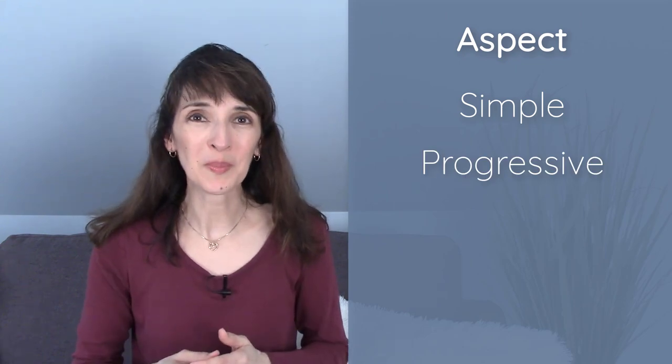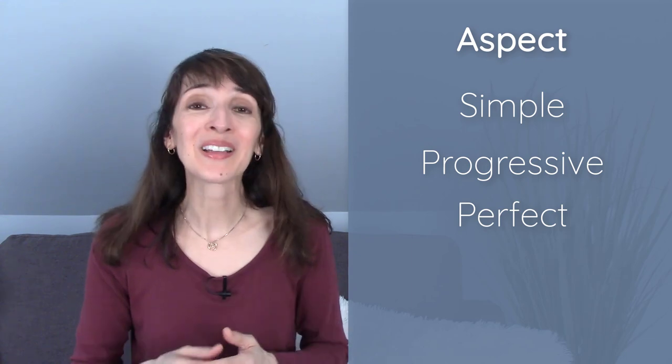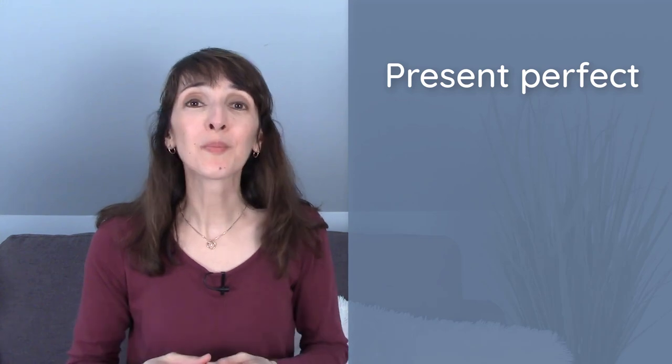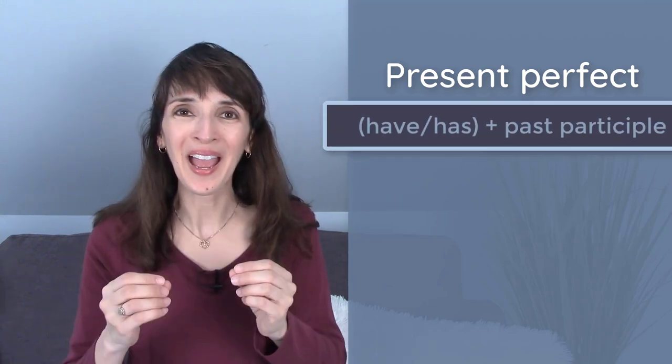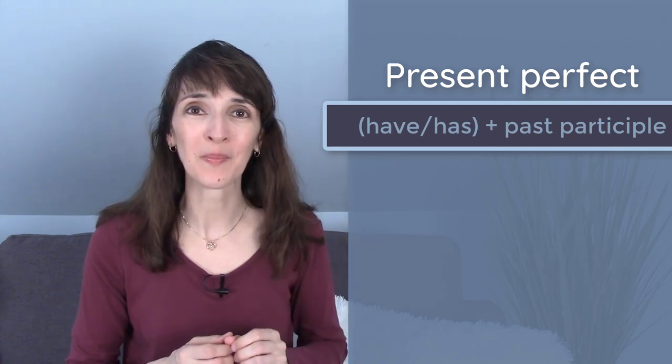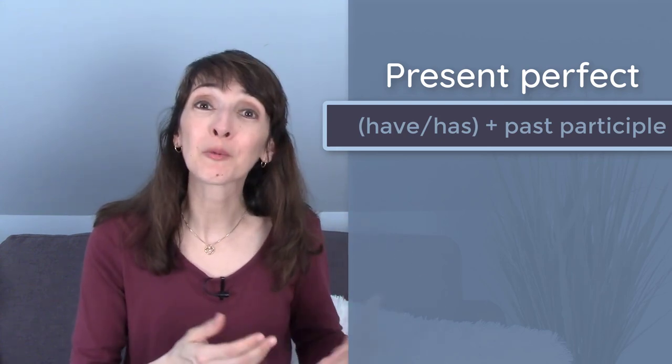So we've covered simple and progressive verb forms. Another aspect is perfect. And yes, we can have perfect progressive forms as well. The present perfect uses have or has plus the past participle, the -ed form, that third form of an irregular verb.